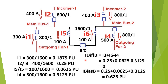Similarly, for zone B, i_diff_B = i3 + i5 − i4 = 0.25 + 0.0625 − 0.3125 = 0. The differential current for zone B is again zero in per-unit value. The bias current for zone B = i3 + i4 + i5 = 0.25 + 0.0625 + 0.3125 = 0.625 pu.